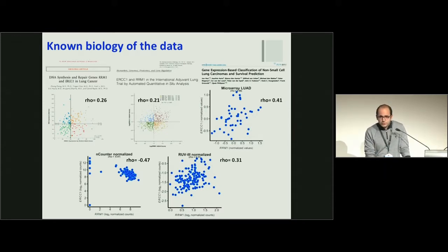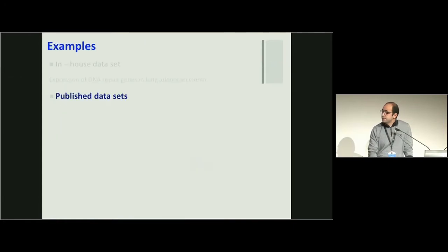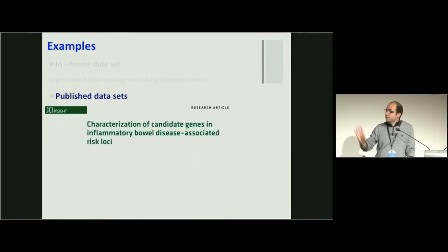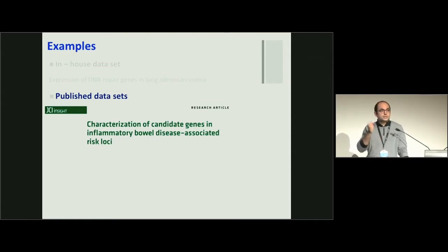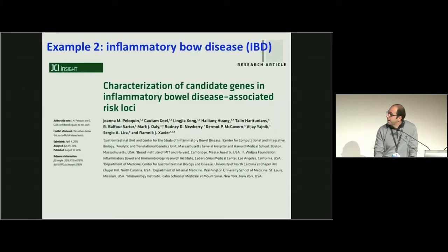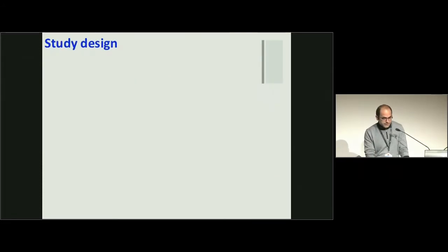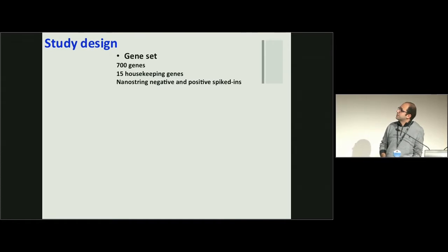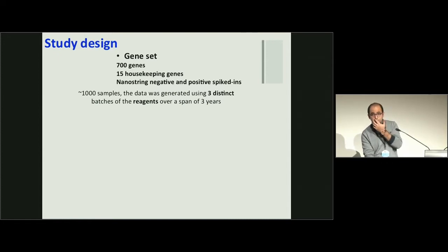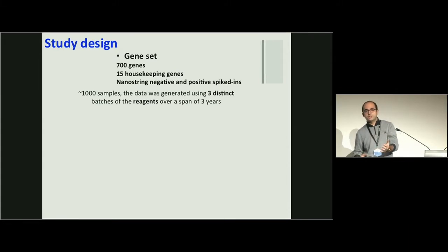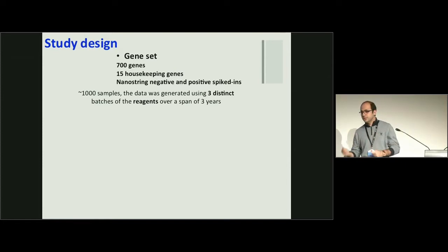To see the performance of NanoString versus RUV3 on other datasets, I looked at a published dataset. I'm going to take you through this published data quickly. I call the first author 'Plaquen.' In terms of study design, they have 700 genes, 15 housekeeping genes, and NanoString negative and positive controls. They profiled 1,000 samples across three distinct reagents - they ran out of reagent, ordered another, ran out again, and ordered another. These different reagents caused batch effects.